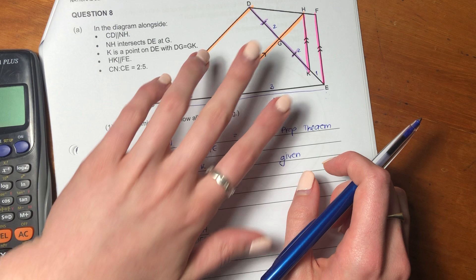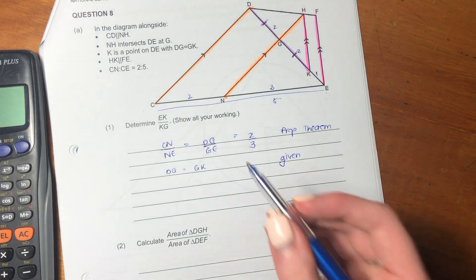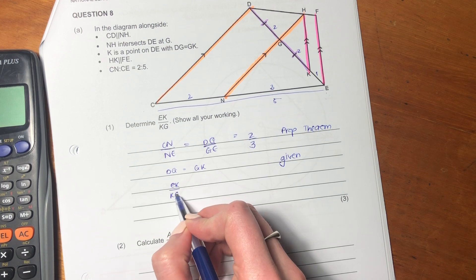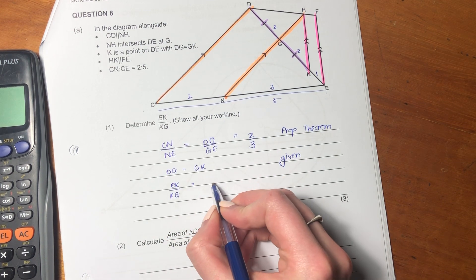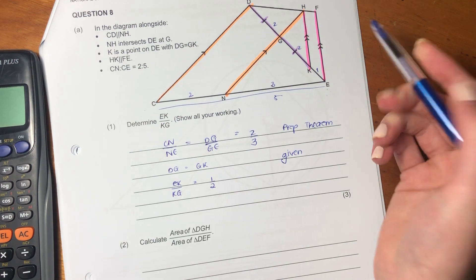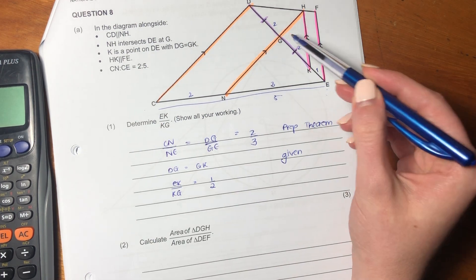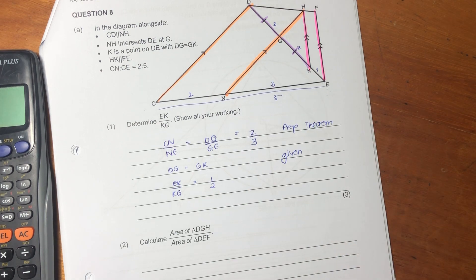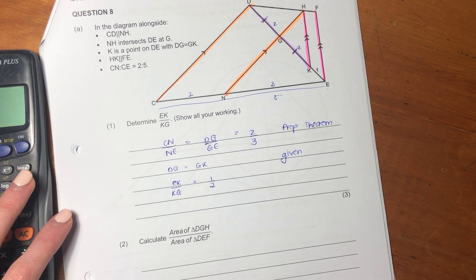So we're taking all the information that we've got into consideration, which means that EK over KG equals 1 over 2, so we're using the proportionality theorem to get our answer.